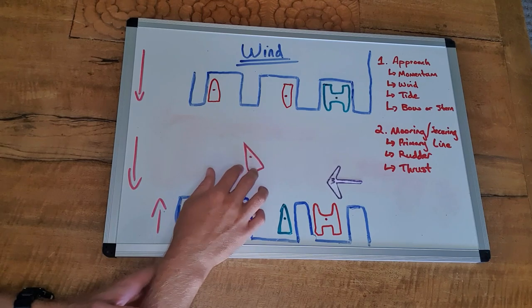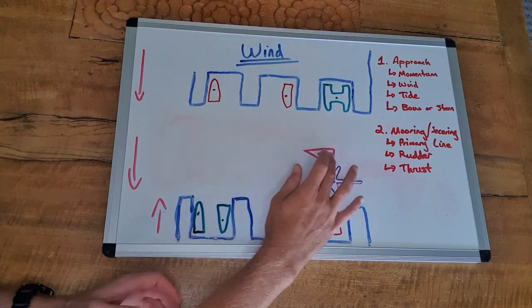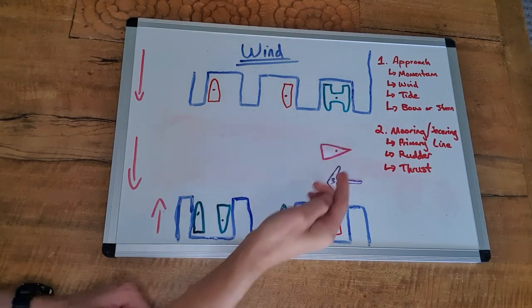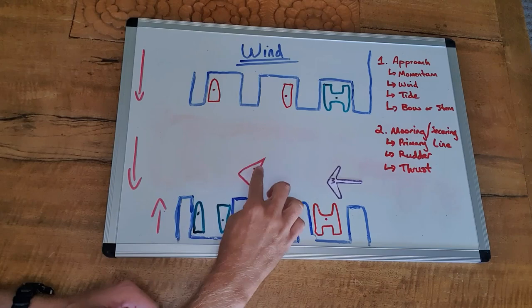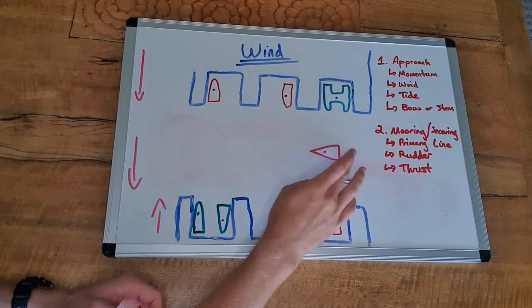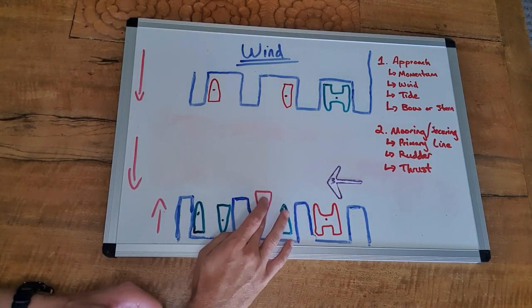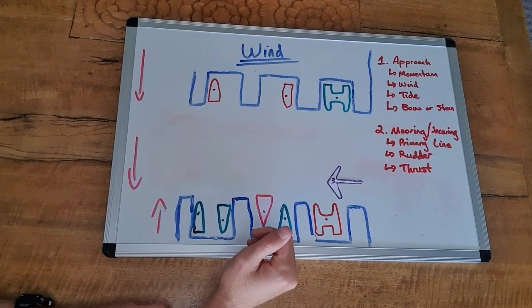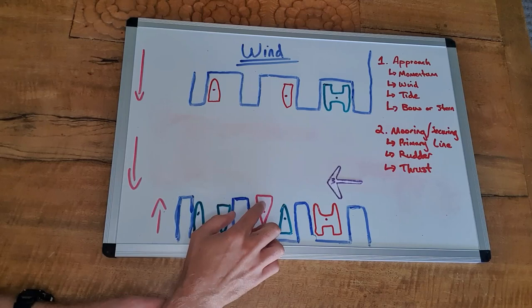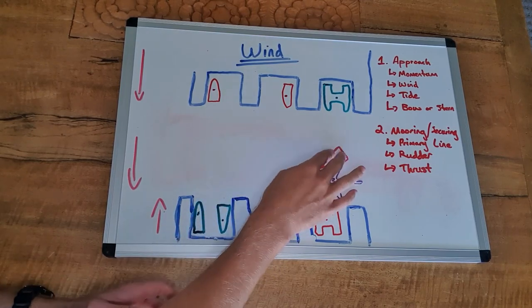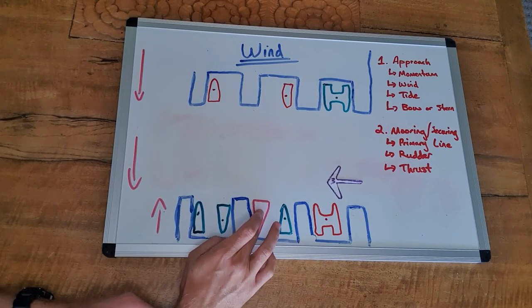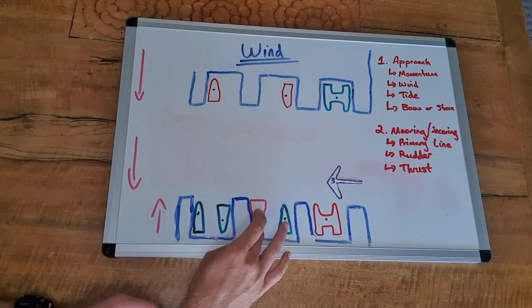So the only thing we've really got to be conscious of is that if we were to come down this way and approach with the wind, whether that's bow first or if we were operating stern, going stern in. If we were to come this way with the wind, we're combining momentum and wind force and that gives us the potential if that breeze is kind of anywhere from 10 knots and over, even possibly 5 knots if the marina is open enough.